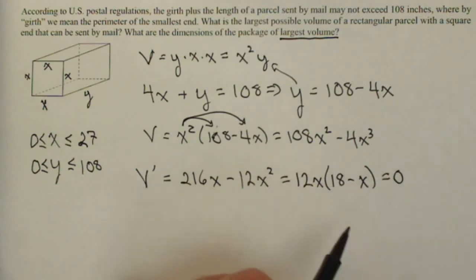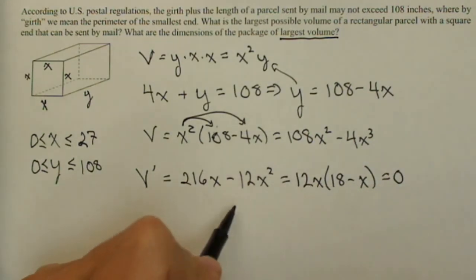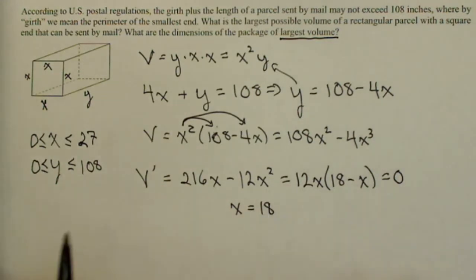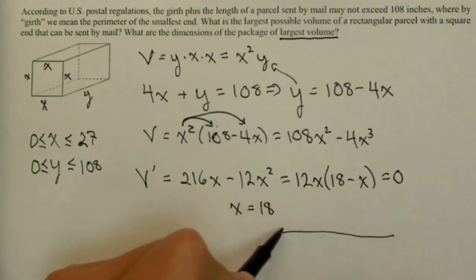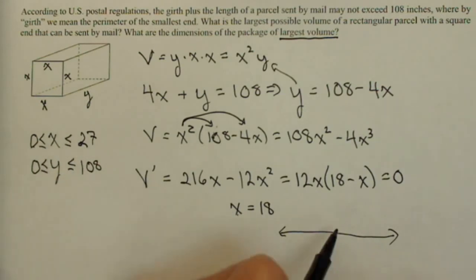And we'll factor as much as possible. So we can pull a 12x out of both terms, and that leaves us with 18 minus x. So when I set that derivative equal to 0, I've got a critical point at x equals 18. Now let's ensure that this is, in fact, a maximum. It's in between our constraints, between 0 and 27.